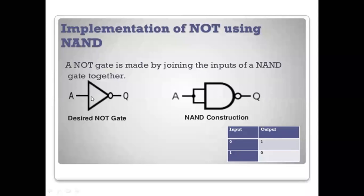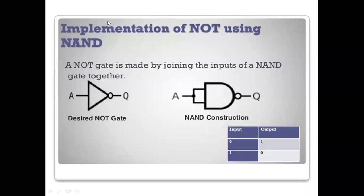NOT gate is single input, single output. In the NAND gate diagram, short the two input terminals and connect single input A. The output Q = A into A (NAND) = A bar. Input A=0 gives output A bar=1; input A=1 gives output A bar=0. That is implementation of NOT gate using NAND gate.